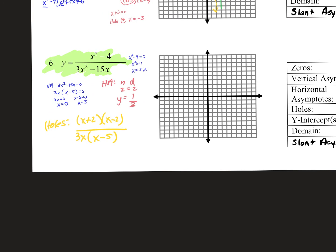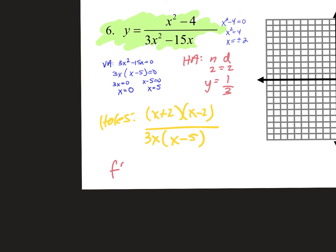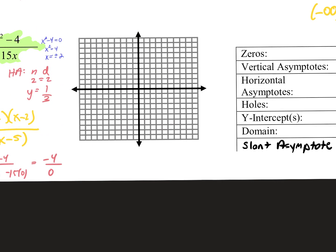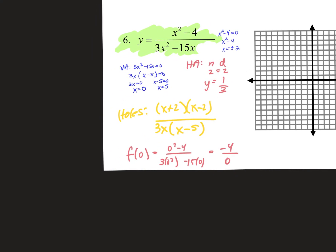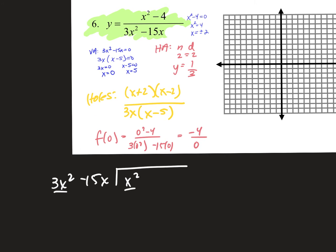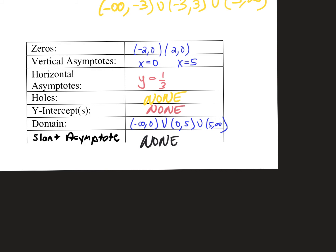How do you find y-intercepts? Plug in zero for everything. f(0) equals 0 squared minus 4 over 3 times 0 squared minus 15 times 0, which is negative 4 over 0. That's undefined — so there's no y-intercept. It does not cross the y-axis. For slant asymptotes, do long division: 3x squared goes into x squared one-third times, which is our horizontal asymptote. So when degrees are equal, there's never a slant asymptote.